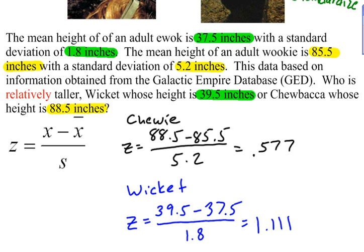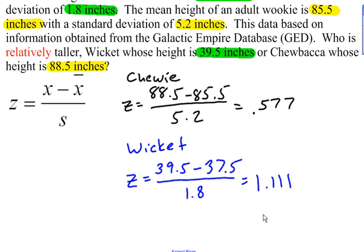So, what does this tell us? I found the z-scores. What does it mean? Well, it means that Chewbacca's height is 0.577 standard deviations above the mean.